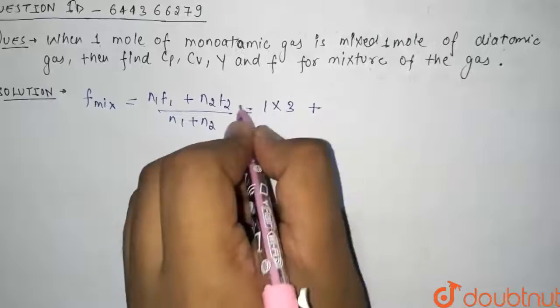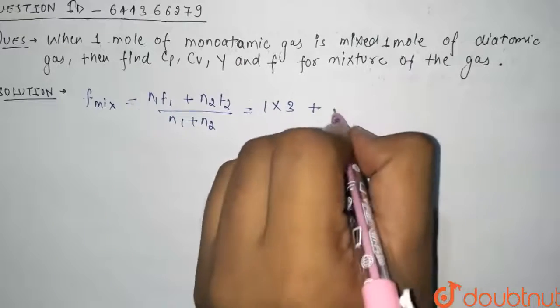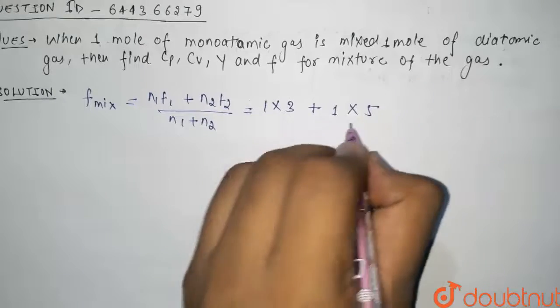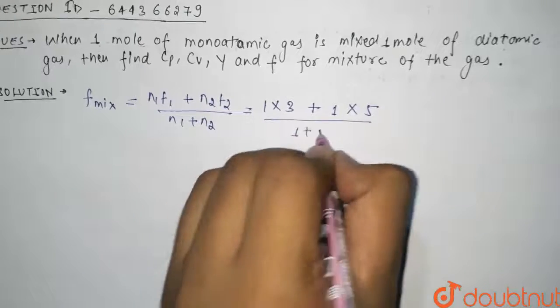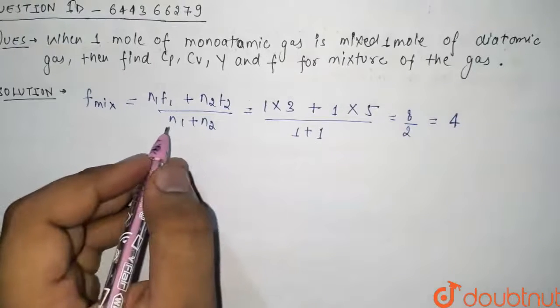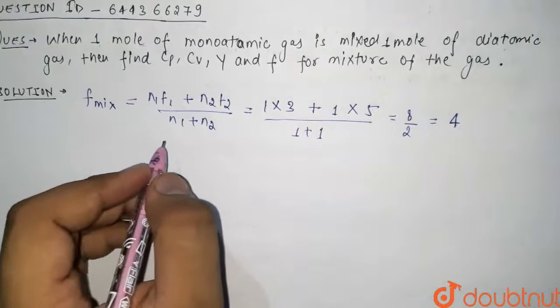So it will be N1 is 1 into F1, the degree of freedom for monatomic gas is 3, plus N2 is 1 again into F2, the degree of freedom for diatomic gas is 5, divided by N1 plus N2, that is 1 plus 1. So it comes out to be 8 by 2, that is equal to 4. So our F mixture, the degree of freedom for the mixture, is 4.